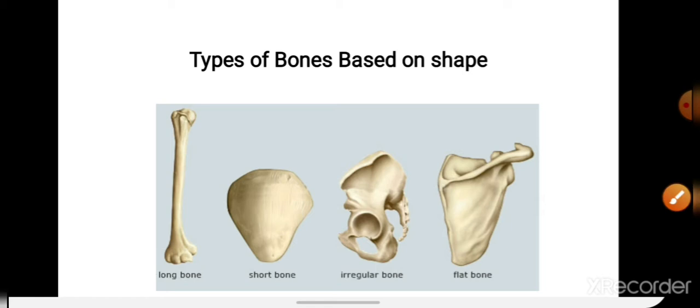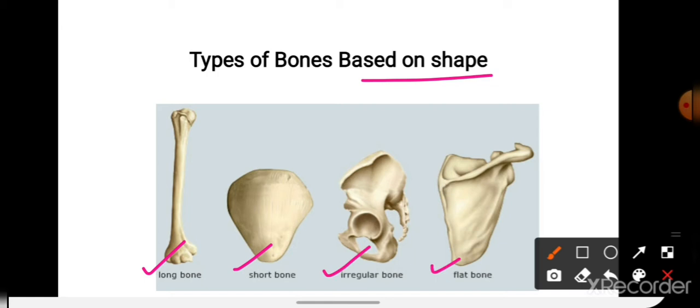Basically there are four types of bone on the basis of their shape: long bone, short bone, irregular bone, and flat bone.